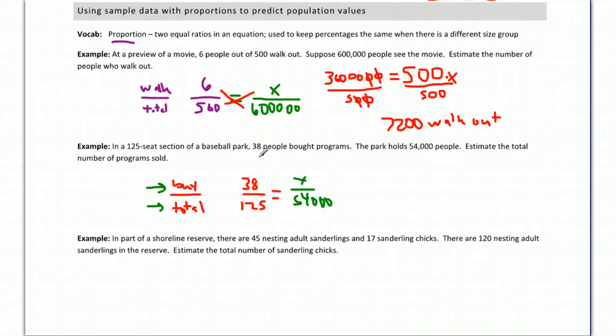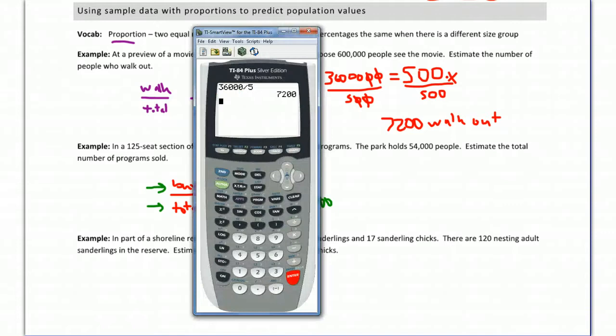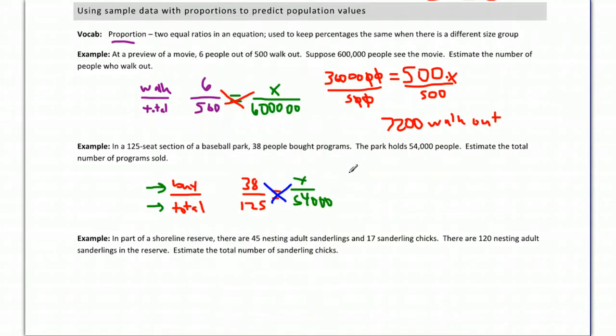Again, like earlier, I always want to cross multiply and then I will eventually divide. So 38 times 54,000. I'm not going to do that one in my head. 38 times 54,000 gives me 2,052,000. So 2,052,000, and that's equal to 125 times x.